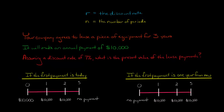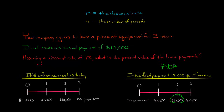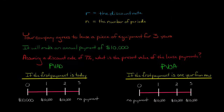If the first payment is one year from now, this is an ordinary annuity. There is no payment today — the first payment of $10,000 doesn't occur until one year from now, then another payment two years from now, and another three years from now. So this scenario is the present value of an ordinary annuity, while the previous scenario — first payment today — is the present value of an annuity due.